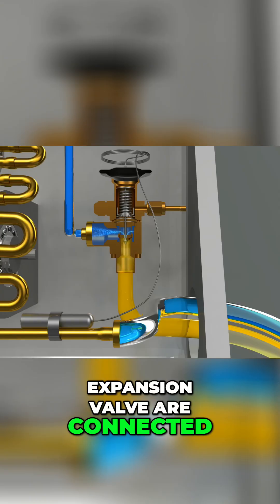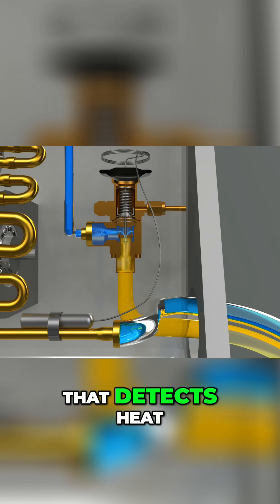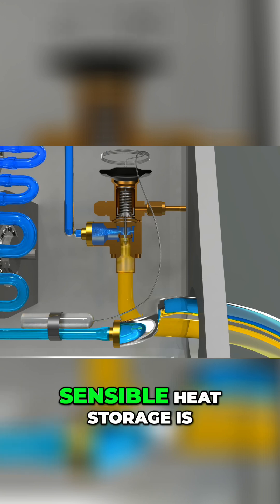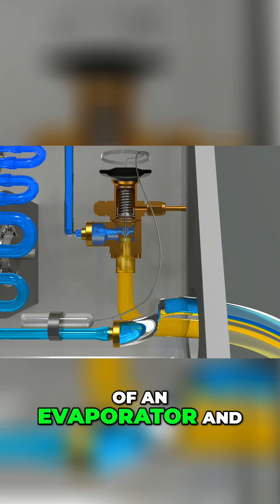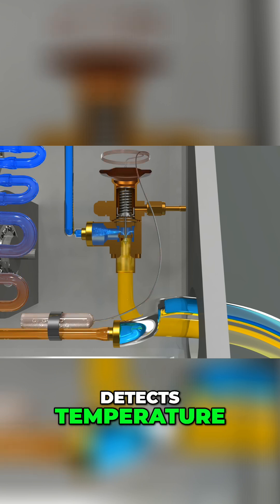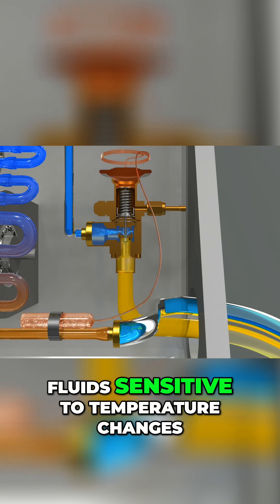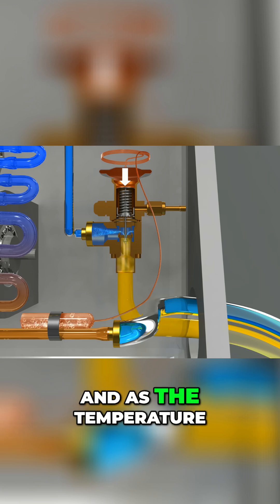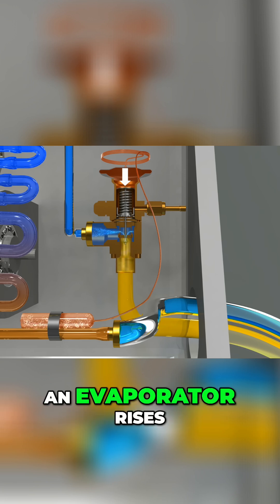Expansion valves are connected to sensible heat storage that detects heat. Sensible heat storage is installed on the exit of an evaporator and detects temperature. Inside the storage is fluid sensitive to temperature changes, and as the temperature at the exit of an evaporator rises.